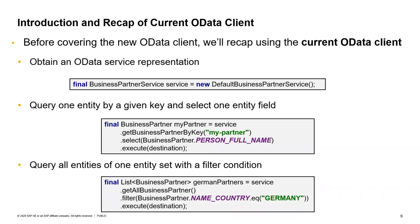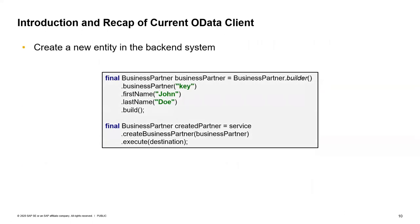Another example is querying the whole entity set. Here I'm interested in business partners where the country equals Germany — we call dot filter, provide the field name, and Germany as a string for the equals method, then call execute. Another example is creating a business partner in the backend system: using the builder pattern to create a BusinessPartner object, calling service.createBusinessPartner, passing the business partner as argument, invoking execute on a destination, and getting back the created business partner.